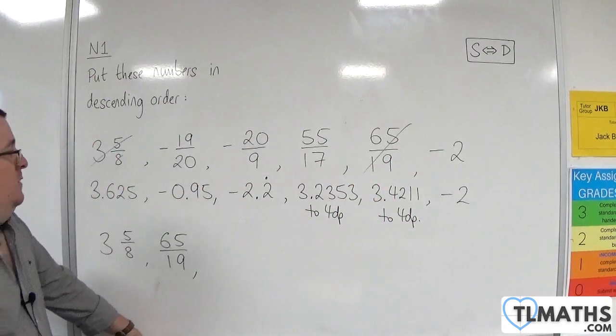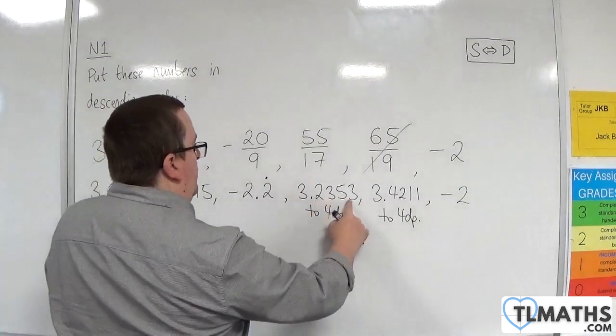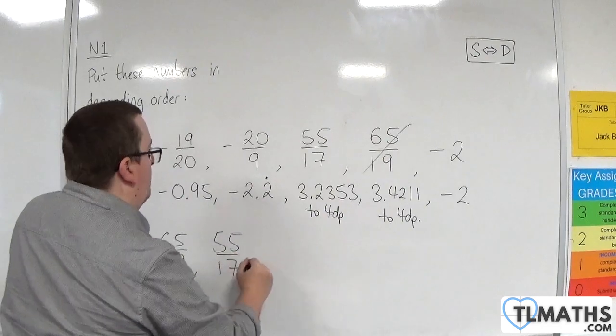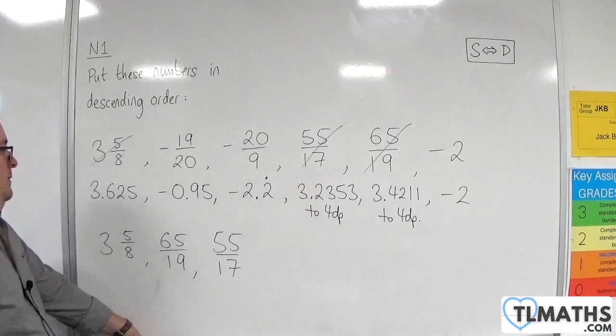Right, then we're going to have this one, 3.2353 to 4 decimal places, so 55 over 17.